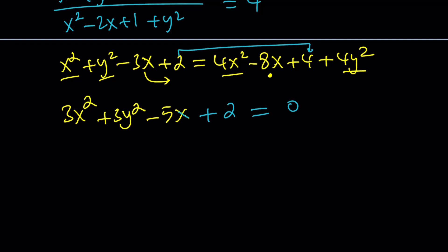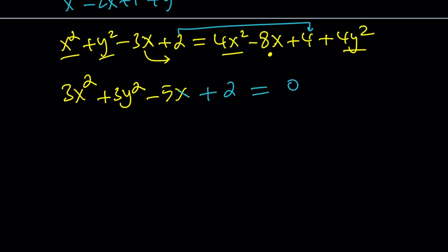Now, one thing to notice is that the coefficient of X squared and Y squared, the coefficients are the same. That's nice. The second thing that's nice is we don't have an XY term because think about rotation of axes, conics. That's going to be complicated stuff. So we're good. Now let's make the coefficients of X squared and Y squared 1, divide both sides by 3, everything by 3. It's going to be X squared plus Y squared minus 5 over 3X plus 2 thirds equals 0.